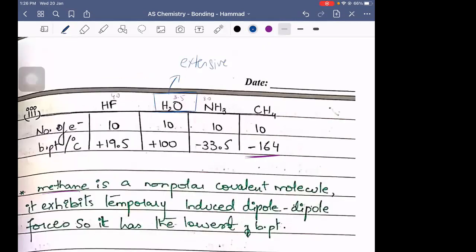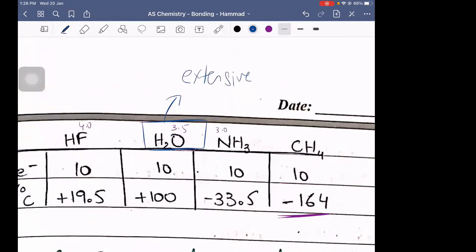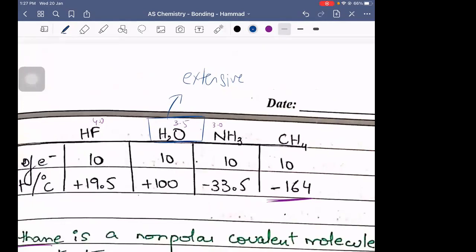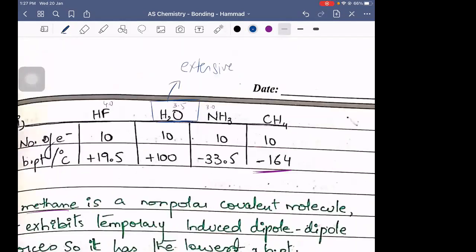NH3, the nitrogen in NH3 has a very small electronegativity value as compared to fluorine and oxygen, right? So it should have a lesser value comparatively for the boiling point. If you are comparing HF and H2O, HF should have had a larger boiling point value.